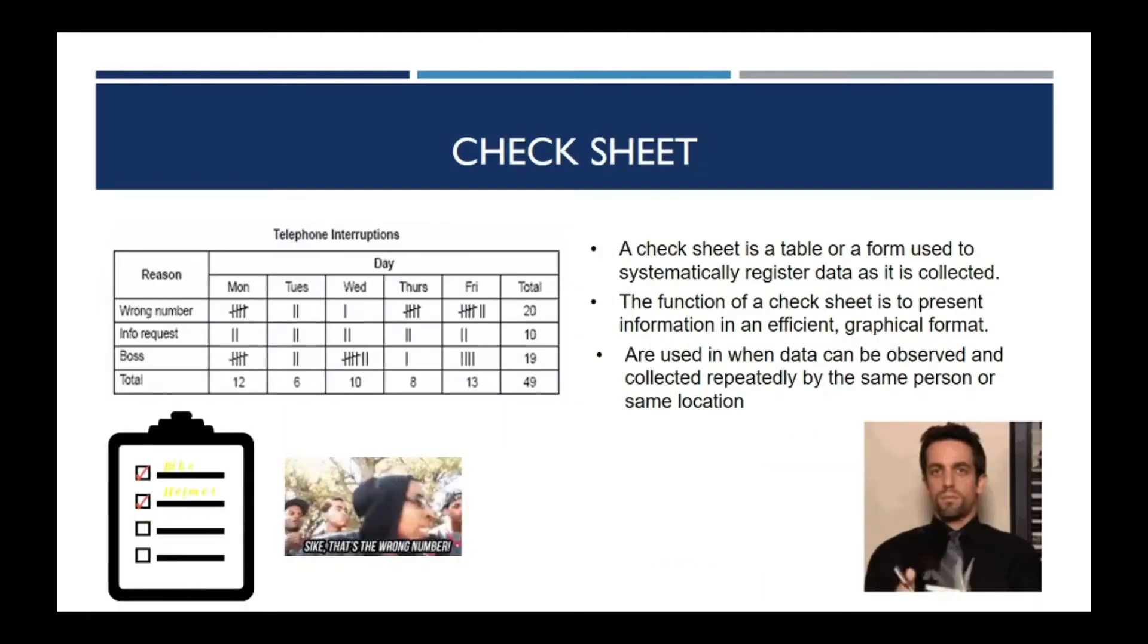Next, we have a check sheet. A check sheet is a table or a form used to systematically register data as it is collected. The function of a check sheet is to present information in an efficient, graphical format. Check sheets are used when data can be observed and collected repeatedly by the same person or at the same location. Here is an example of the check sheet.